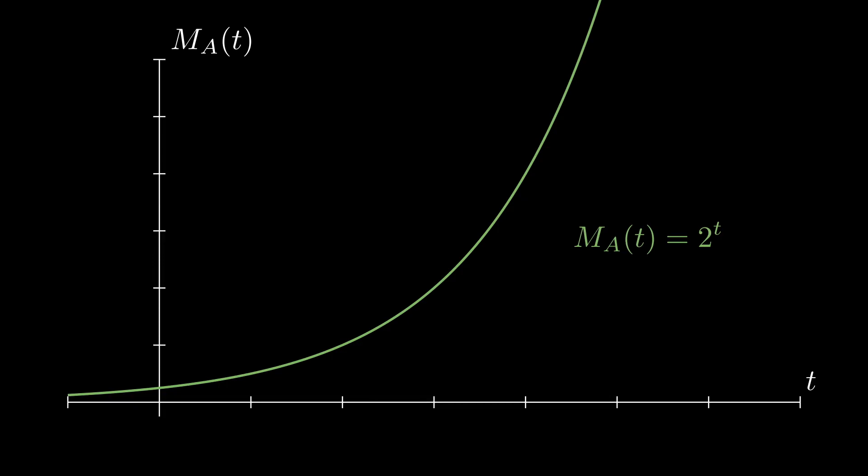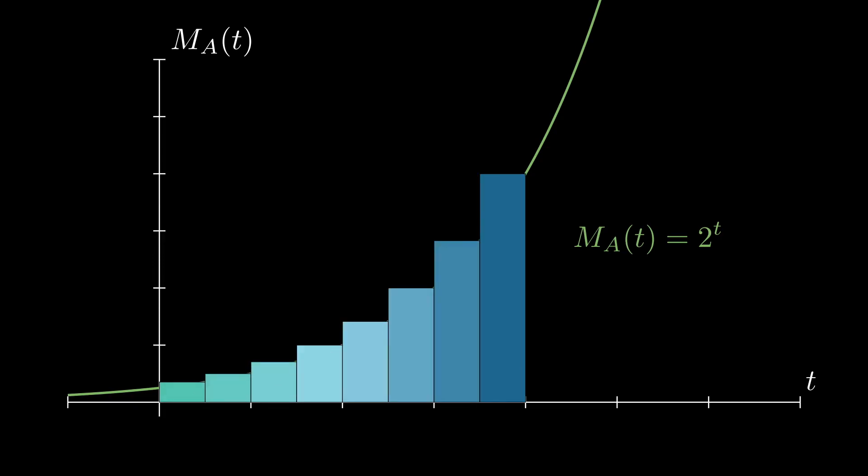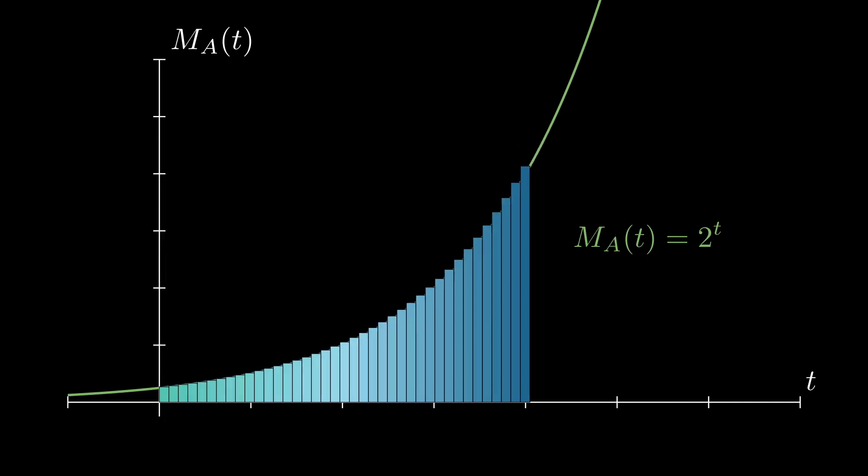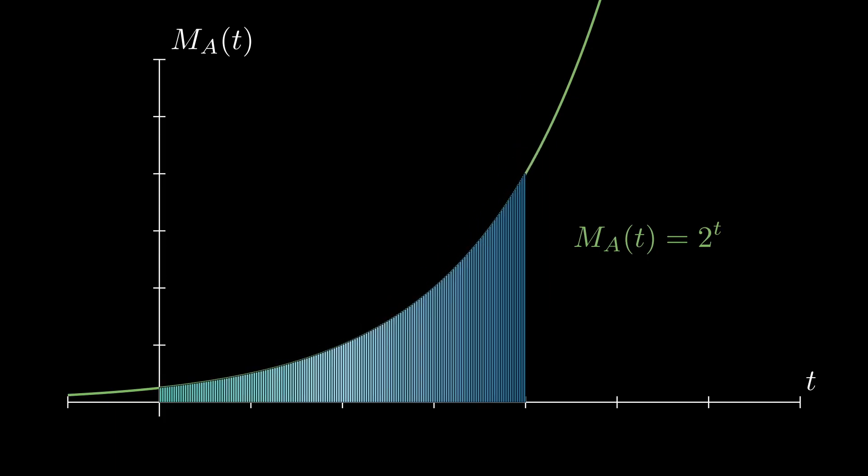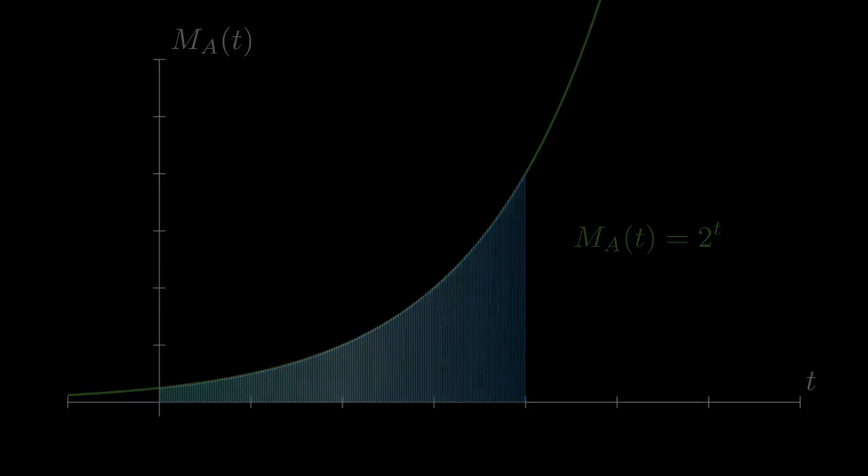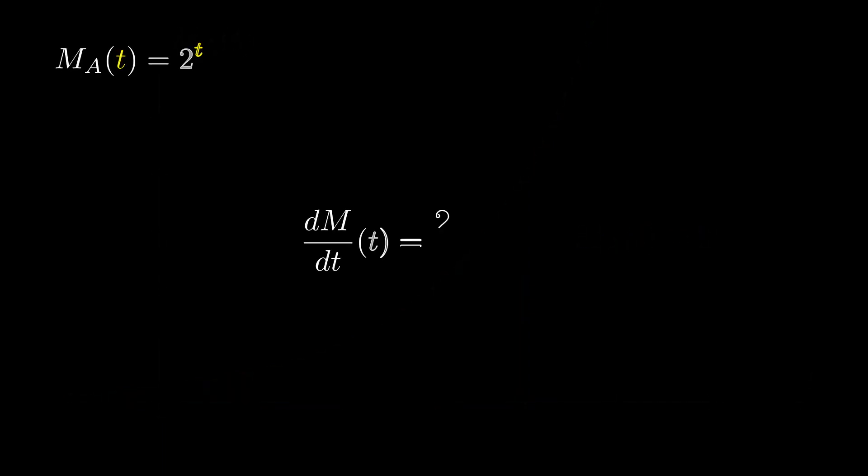To understand what the real derivative of an exponential function is there is sadly no good way to give you a visual intuition for the given problem. We will have to take a look at the numerical properties of exponential functions in order to succeed at finding the derivative. So let us take a closer look at the term dM over dt of t equal to 2 to the t plus dt minus 2 to the t all over dt. A key property of exponential functions is that we can write this as 2 to the t times 2 to the dt minus 2 to the t all over dt.